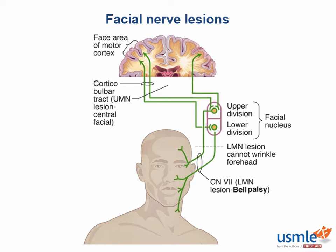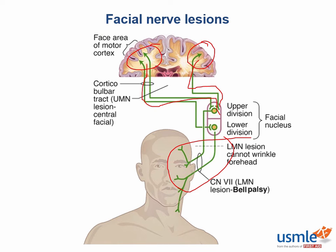Forehead involvement is a major clue to help clinically localize the lesion. The forehead is bilaterally innervated — both motor cortices send projections to the facial nucleus. Because of this bilateral innervation, if there is any problem using the forehead muscles it must be due to a lower motor neuron lesion, as it is very rare for both hemispheres to be affected simultaneously. This is also important for differentiating a stroke, in which forehead muscle use would be retained in the vast majority of cases.